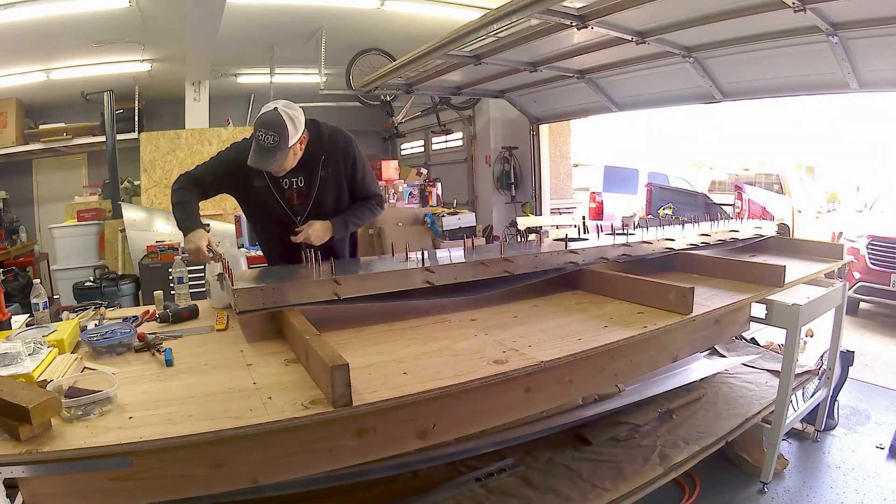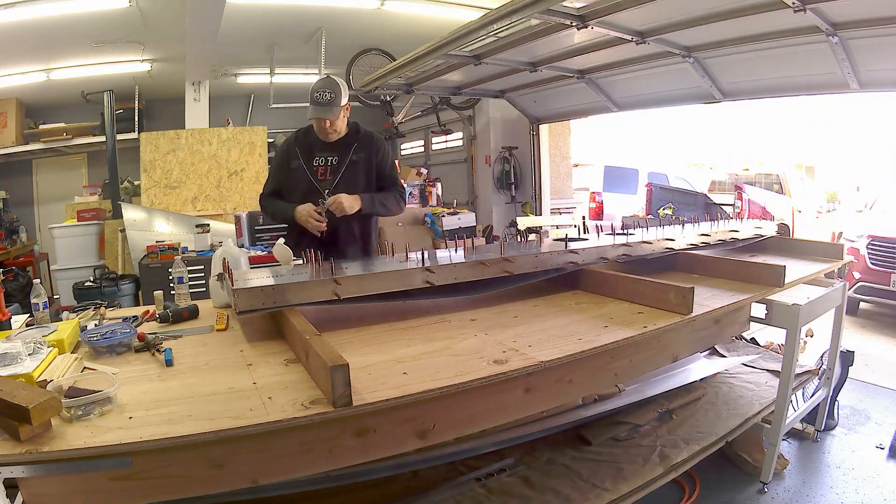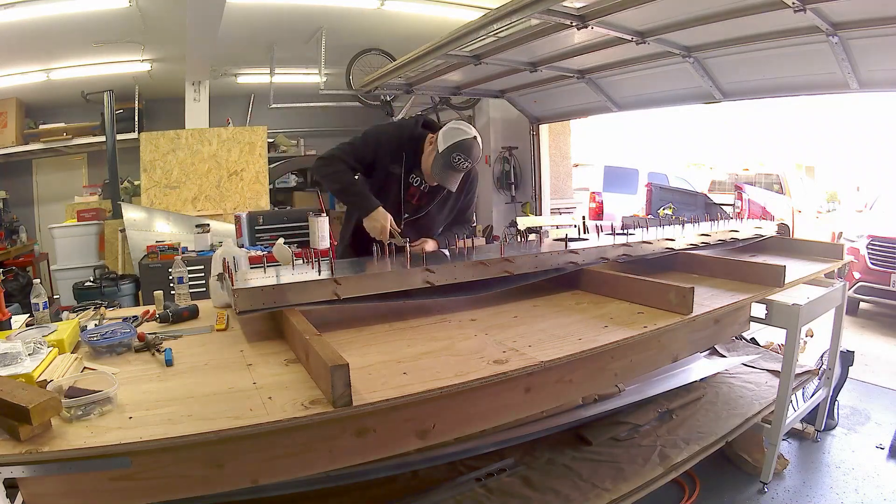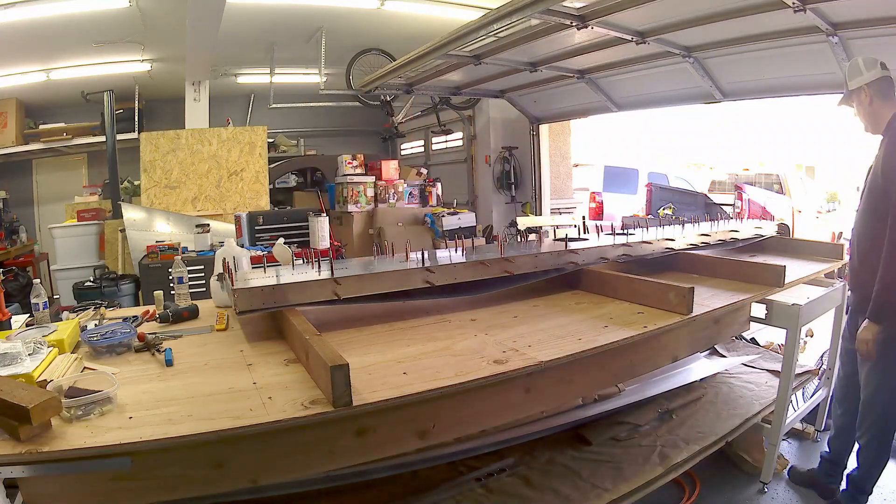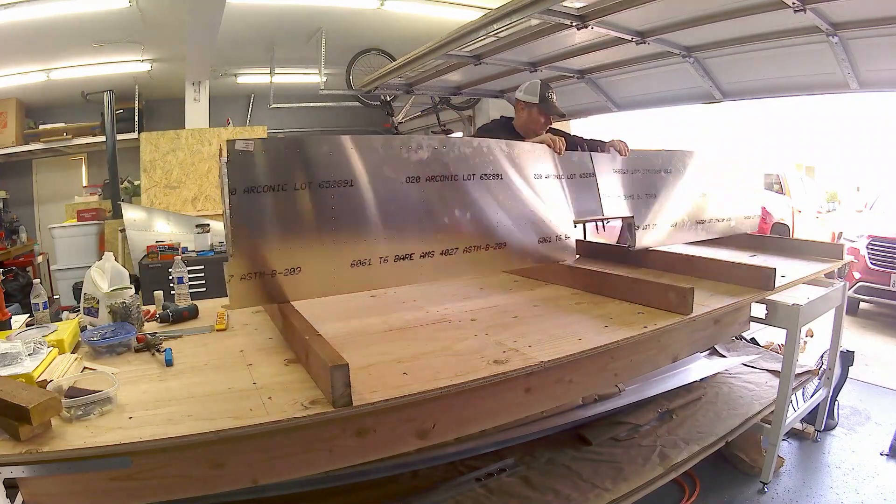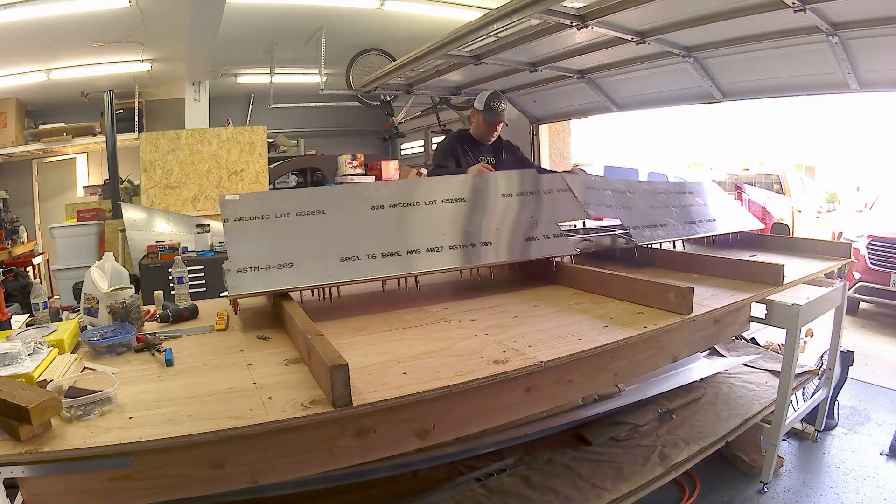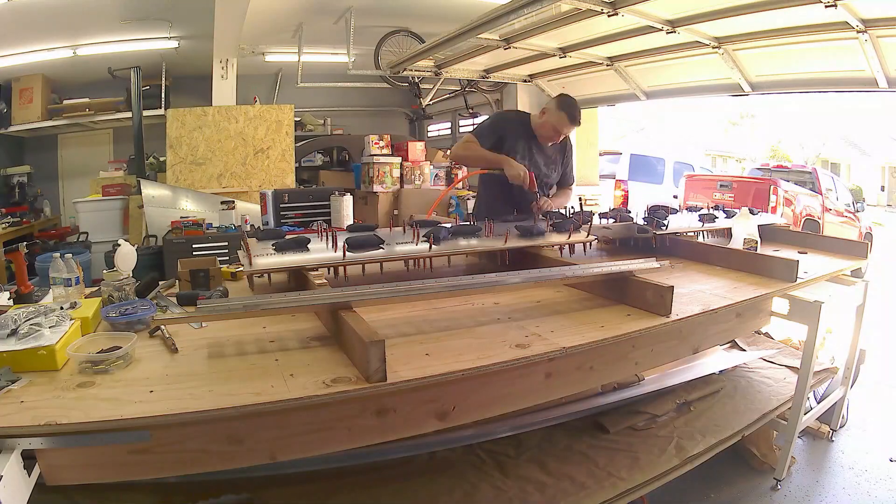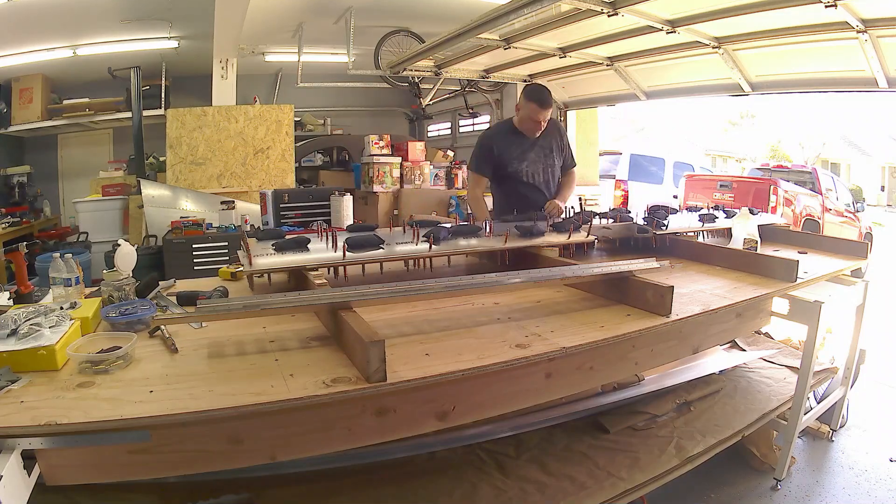The ribs are properly fluted so they're straight and the spars are in the right position. When they go through the CNC machine there's some edges to deburr, so I skipped over all that - I'm going right into the frame build here. One thing I did do that the plans didn't mention was I clecoed the frame together, put the skin on, and match drilled the spars.